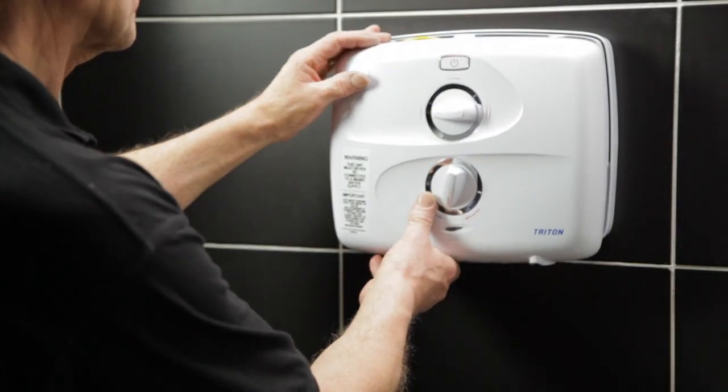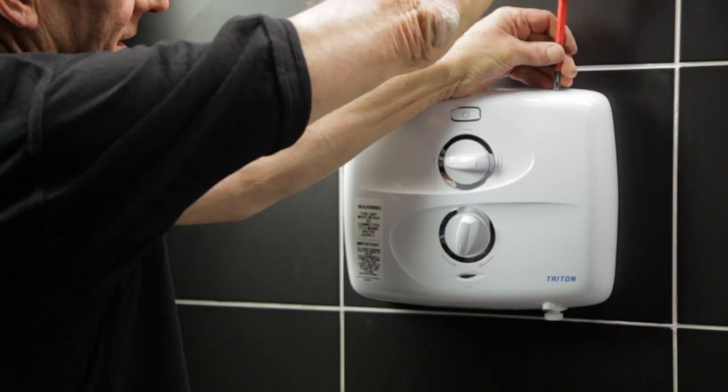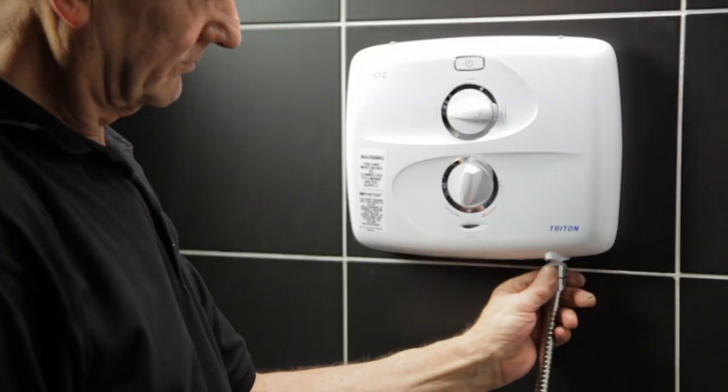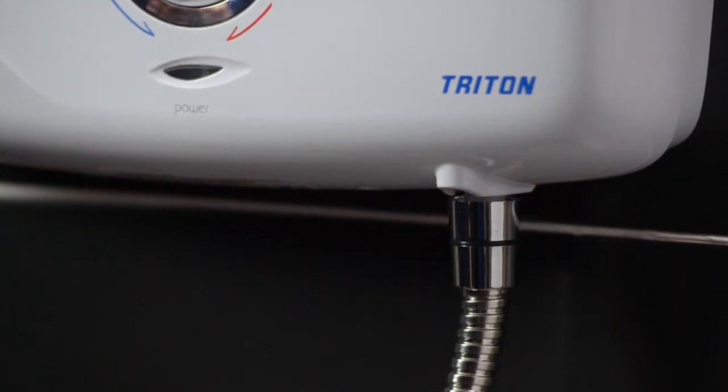Temporarily fit the cover and secure it with two screws. At this point, fit the shower hose but do not fit the shower head until commissioning has been completed.